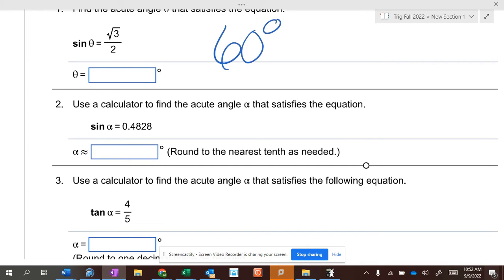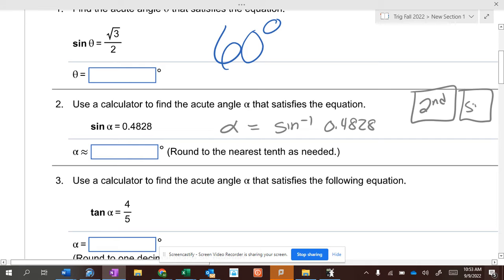So, on your calculator, if the sine of alpha equals this, to get alpha alone, what we're trying to find, what we do is we take the inverse sine of 0.4828. Well, the inverse sine, you push the second button and then the sine button, and that gives you the inverse sine.